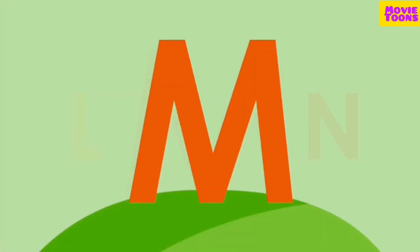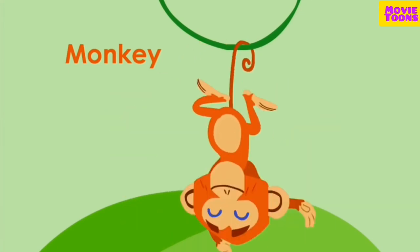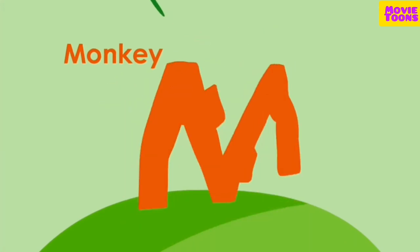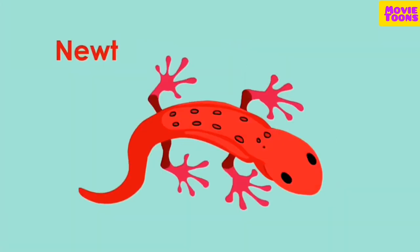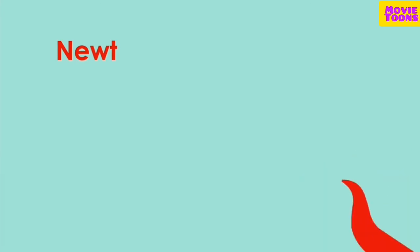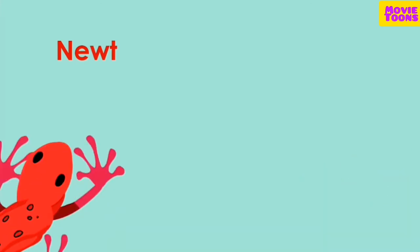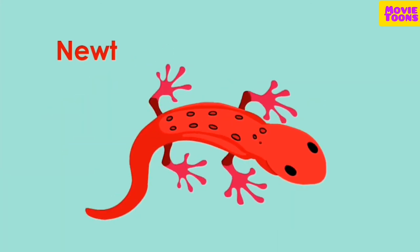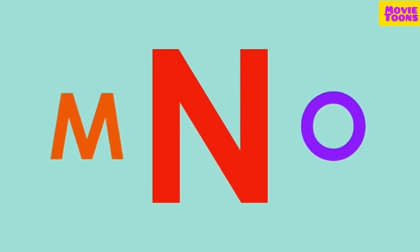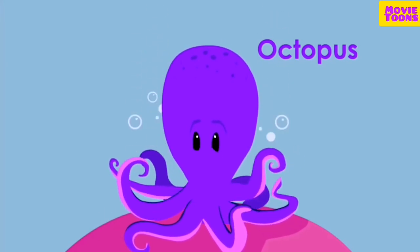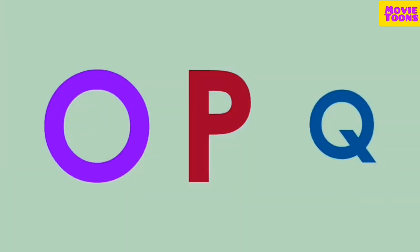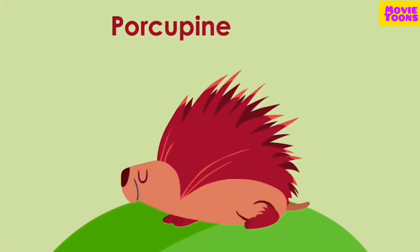M is for monkey. M. N is for newt. N. O is for octopus. O.